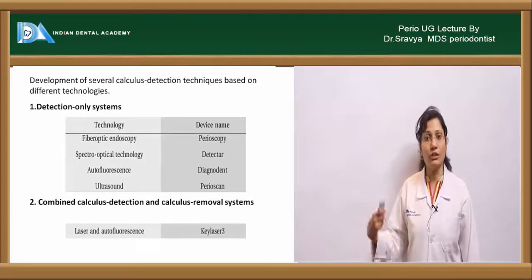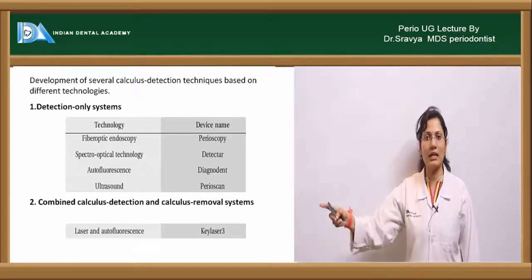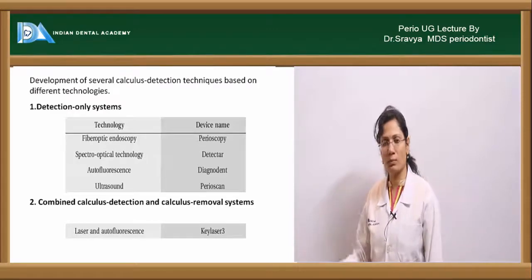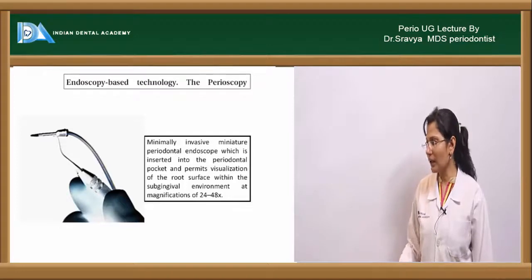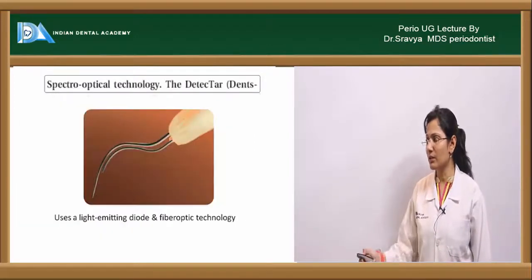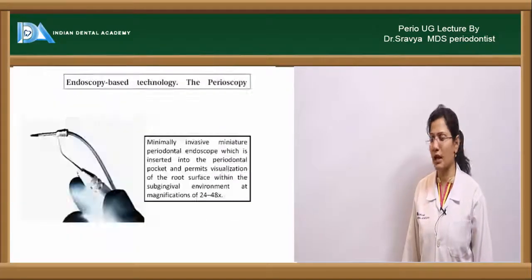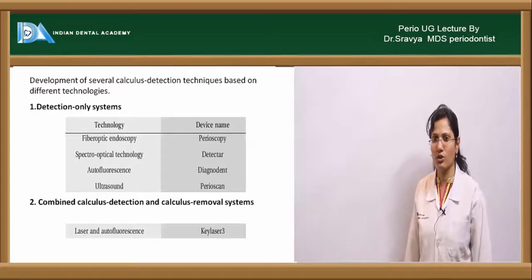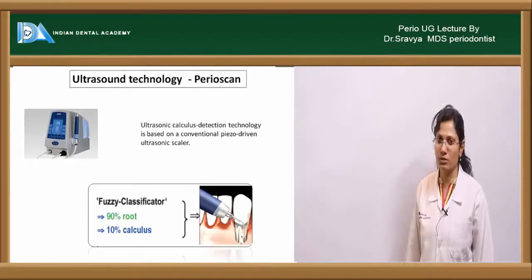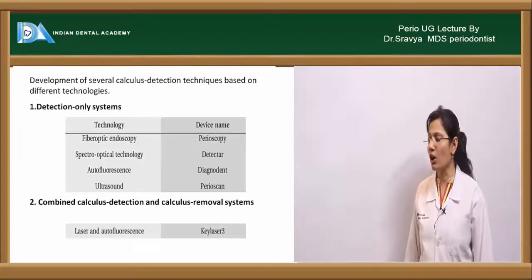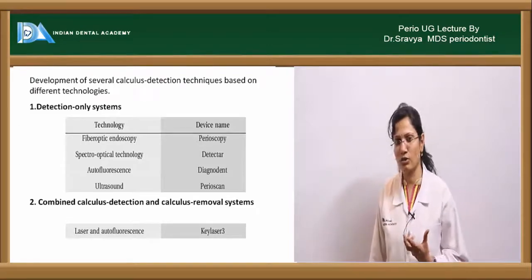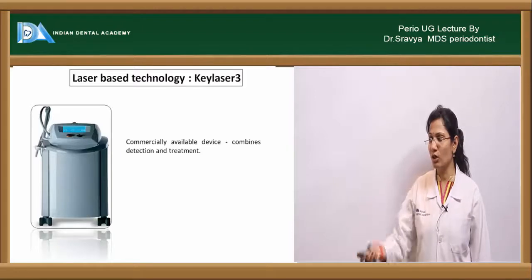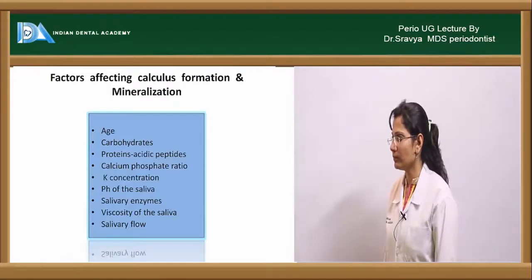Advanced detection technologies include: perioscopy (fiber-optic technology), spectro-optical technology (the Detector device), autofluorescence technology (DIAGNOdent — which emits fluorescent light), and ultrasound technology (Perioscan). Combined detection and removal systems use laser and autofluorescence, such as the KEY Laser 3, a commercially available but expensive device that combines detection and treatment.